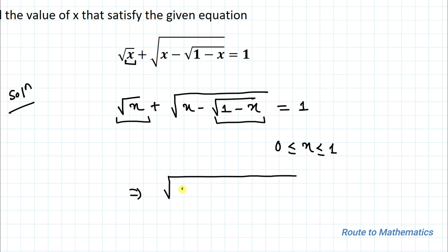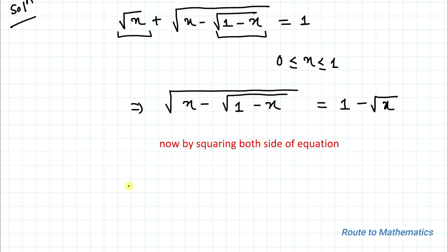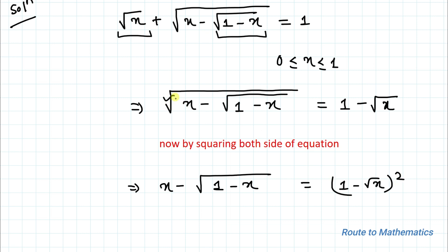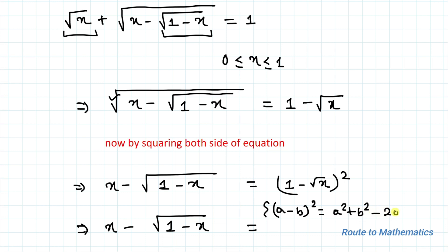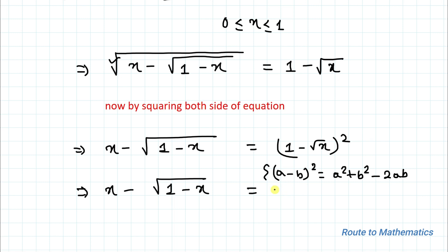In the next step I will take √x to the right hand side, giving us √(x − √(1 − x)) = 1 − √x. Now I will square both sides of the equation. By squaring both sides, the root gets eliminated and we apply the algebraic identity (a − b)² = a² − 2ab + b², giving us x − √(1 − x) = 1 + x − 2√x.